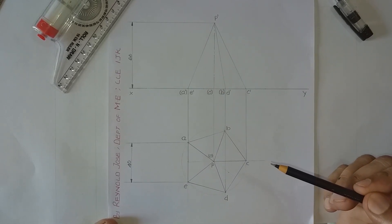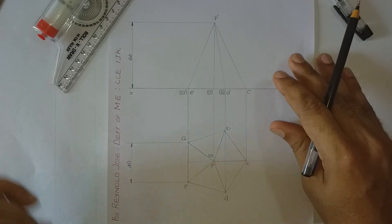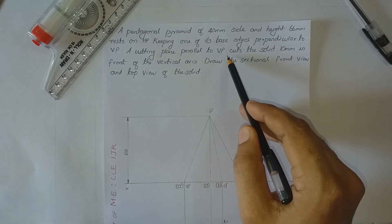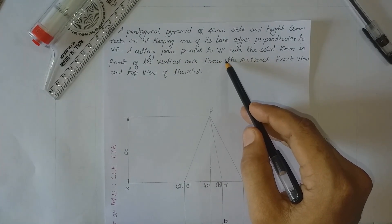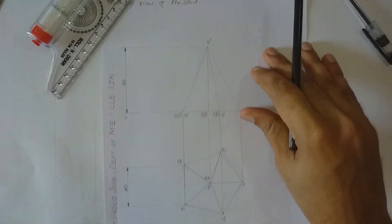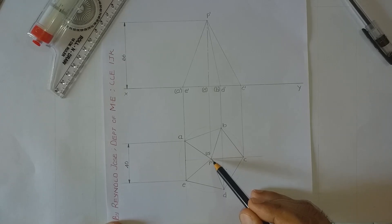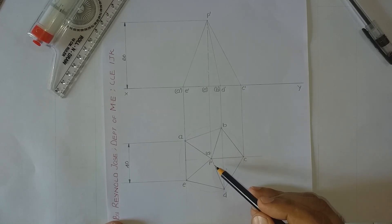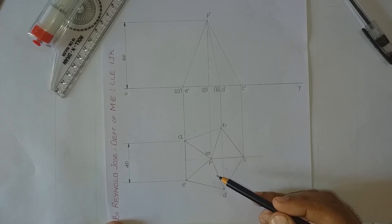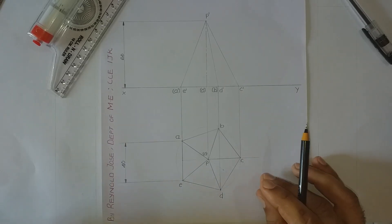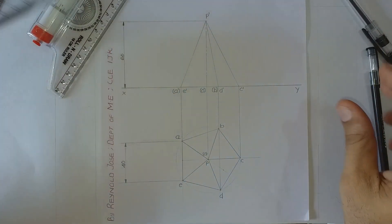The cutting plane is parallel to VP and cuts the solid 10mm in front of the vertical axis. This is the vertical axis PO. In the top view, the axis is seen as a point because the axis is vertical — when observing from the top, you can see it only as a point. Now let us locate the section plane; as mentioned in the question, the section plane is parallel to VP.